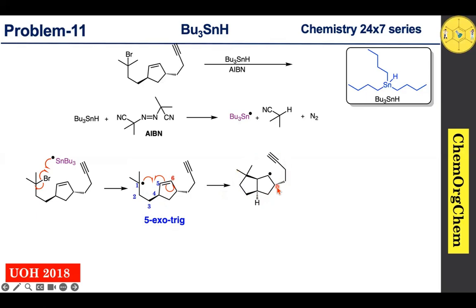You should note down the stereochemistry here. This group is present at the top face, so therefore the radical attack also takes place from the top face, which leads to generating this radical intermediate. This group remains present at the top face.